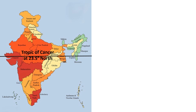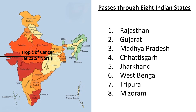The Tropic of Cancer passes through these eight Indian states: Rajasthan, Gujarat, Madhya Pradesh, Chhattisgarh, Jharkhand, West Bengal, Tripura, and Mizoram.